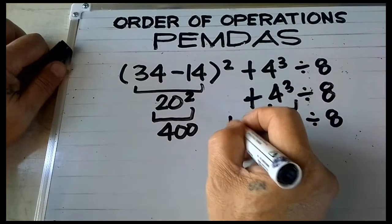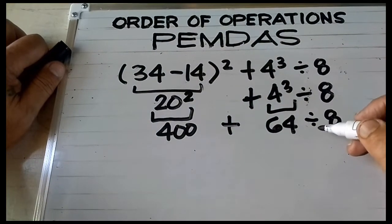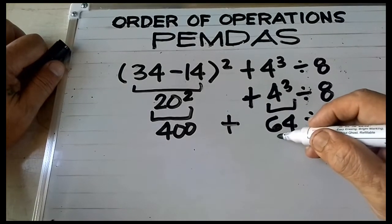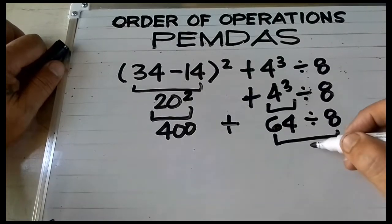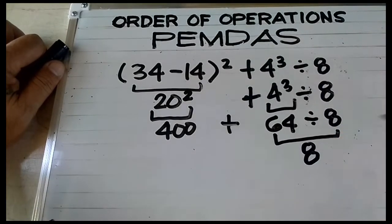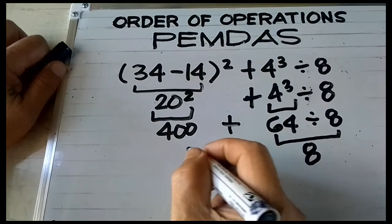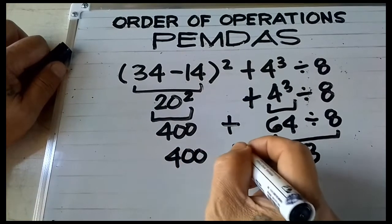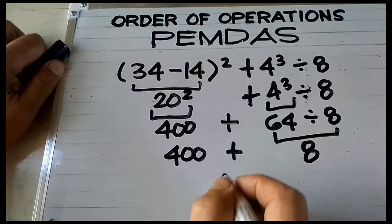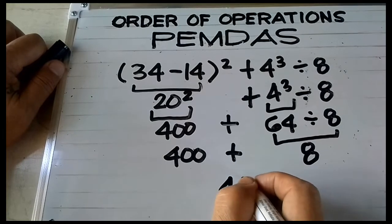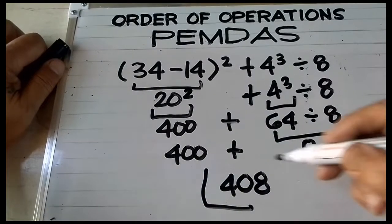Rewrite division and 8, then rewrite addition. According to PEMDAS, division comes first — so 64 divided by 8 is equal to 8. Rewrite 400 and addition. Then 400 plus 8 is equal to 408, and this is the final answer.